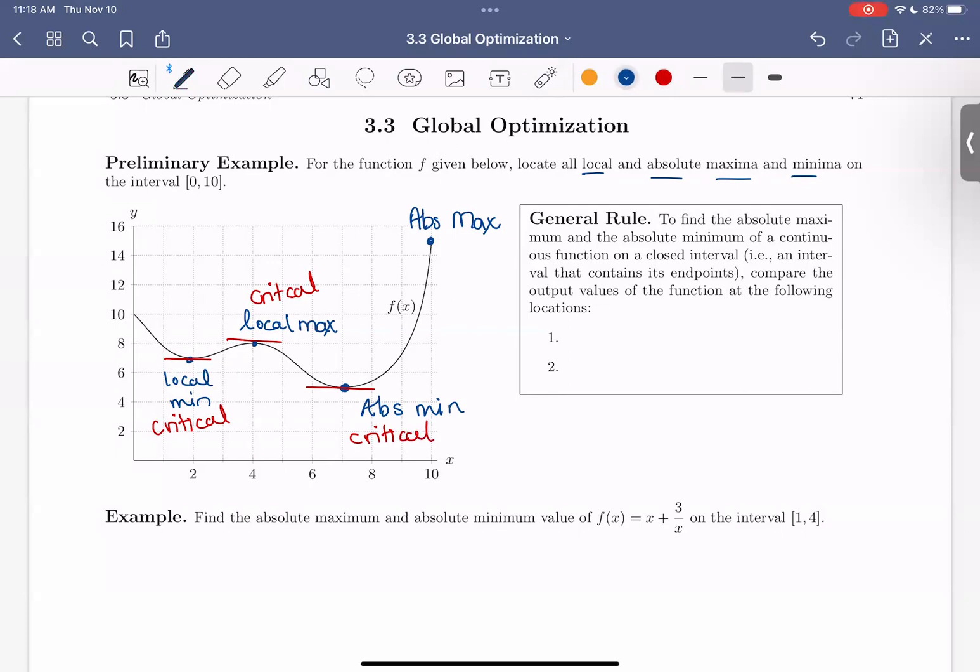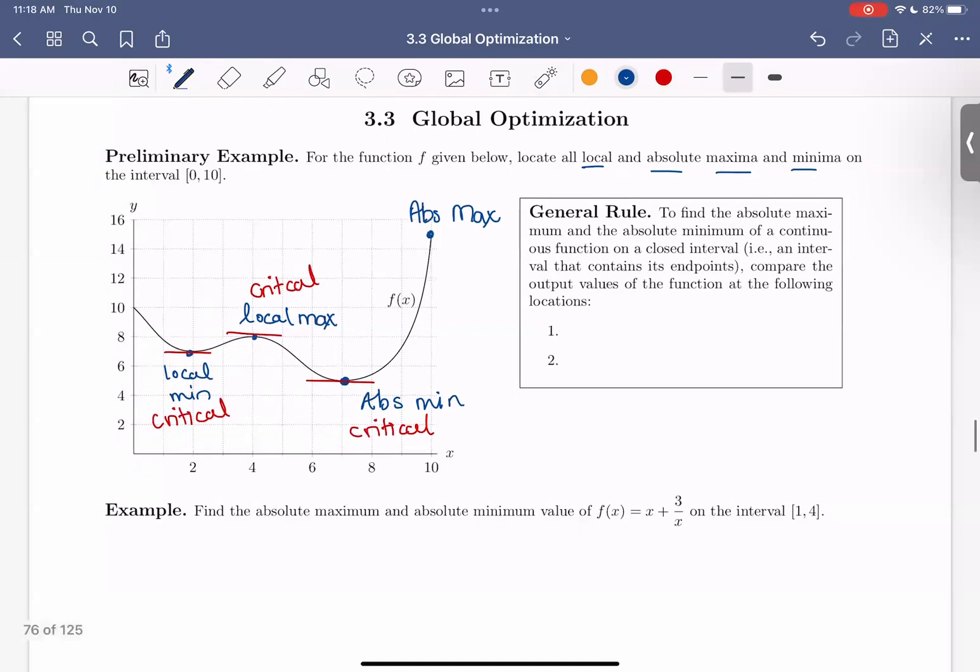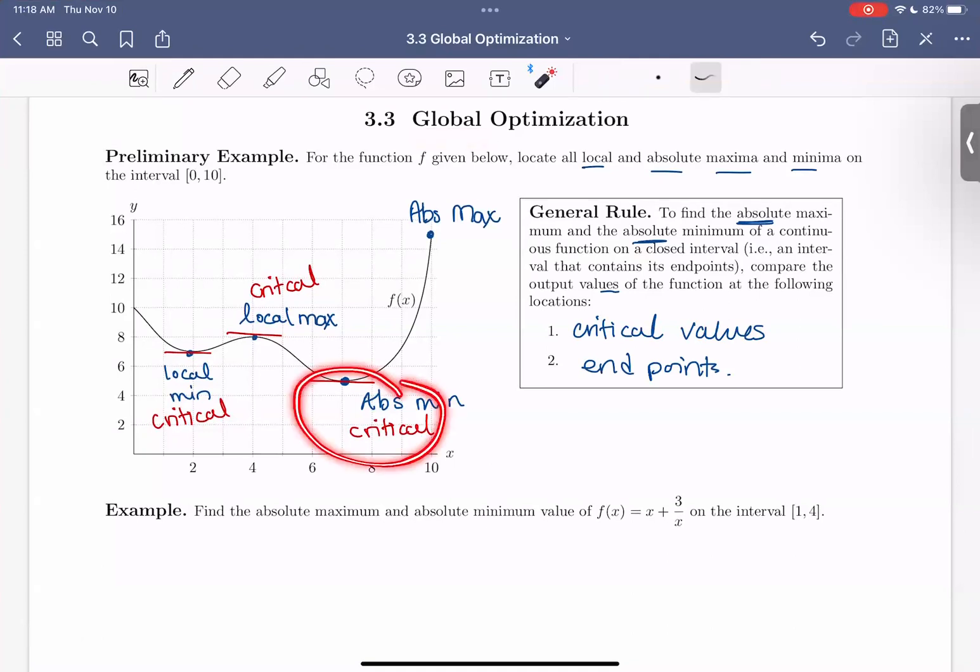This refreshes for us this general rule. To find the absolute max and the absolute min of a continuous function on a closed interval, that is an interval containing the endpoints, we compare the output values of the function at the critical points and the endpoints. It's not enough when we're looking for an absolute or global max or min to just check these critical points. We also have to check endpoints for absolute maxes or min.